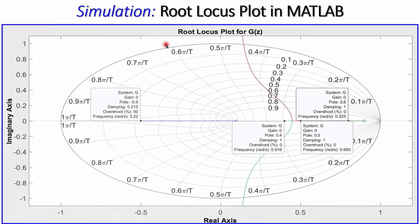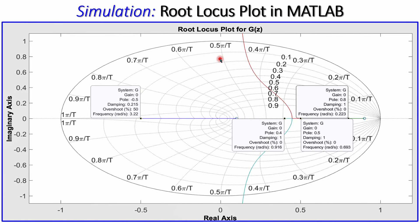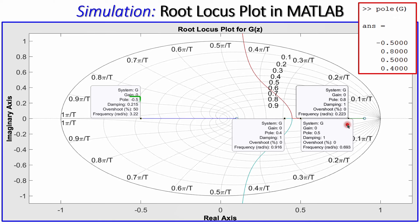The root locus plot, generated using the rlocus(G) command for the discrete time system, shows the poles graphically. We can identify the pole at minus 0.5, at 0.4, at 0.8, and at plus 0.5. The unit circle is shown on the plot, and all poles are clearly inside it. This graphically confirms that the system is stable.